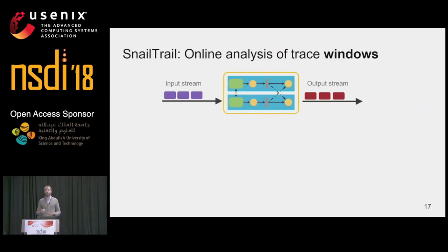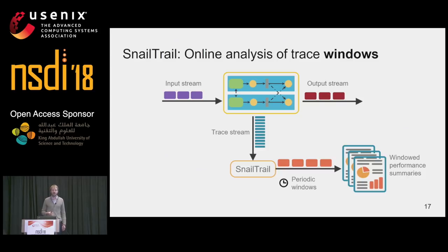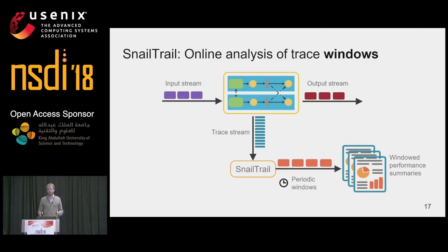We are running a distributed streaming application — for example, Spark or TensorFlow. It consumes a stream of input data, does some processing, and produces a stream of output data. While it's running, it's also outputting a stream of trace data. SnailTrail reads the stream and cuts it into time-based windows. Then it computes performance summaries on each of those windows. I'll now explain how we use the program activity graph to do that.